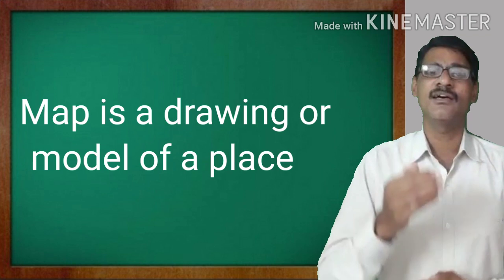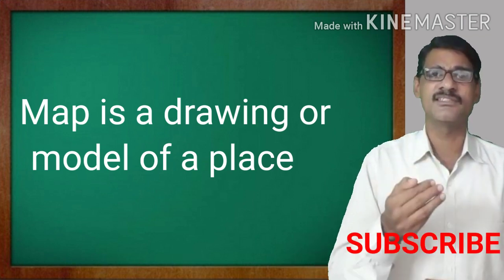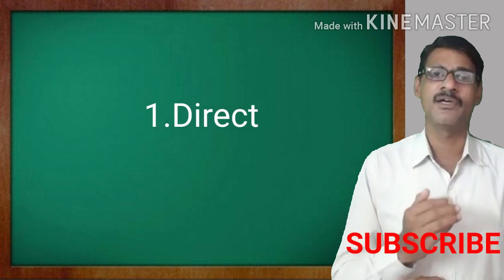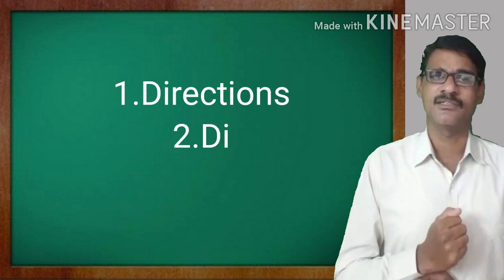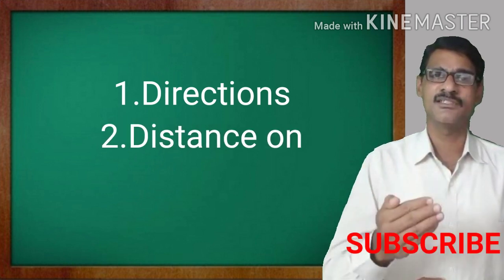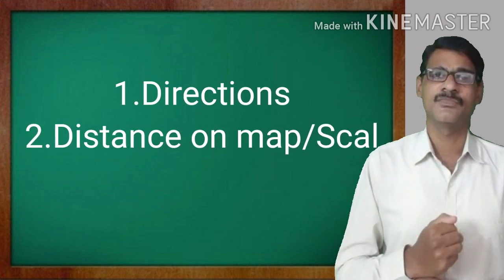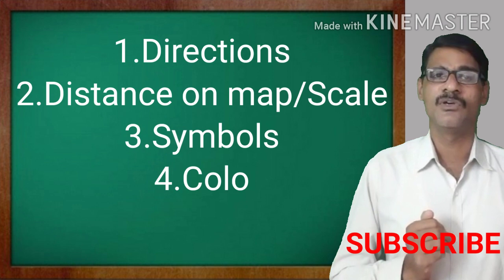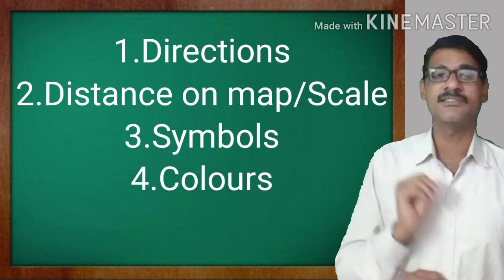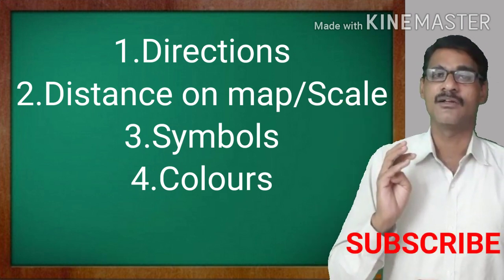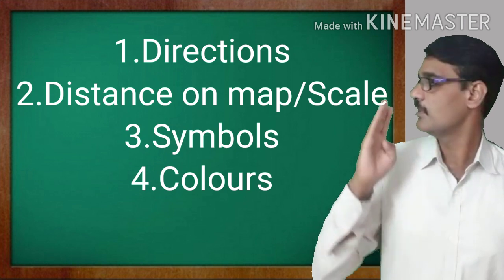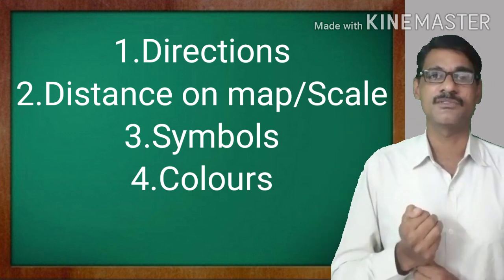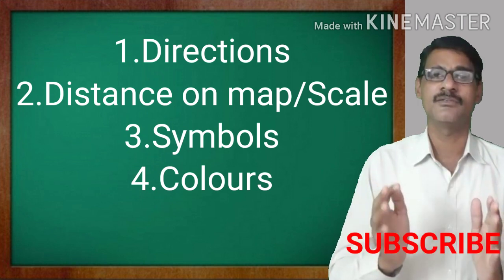What are the important things to know about a map? The important things are: direction, distance and scale, symbols, and colors. Every map will have directions, scale, symbols, and sometimes colors. These are the important features of the map.